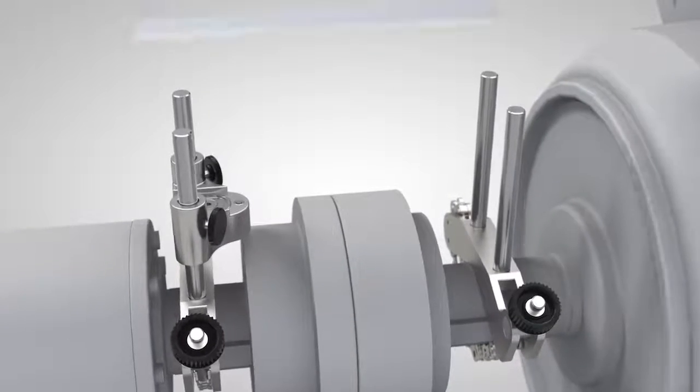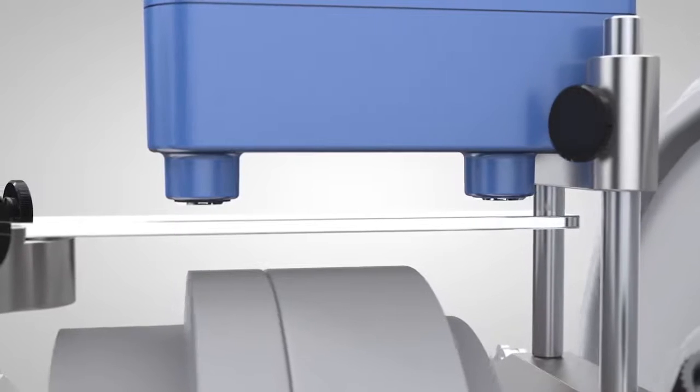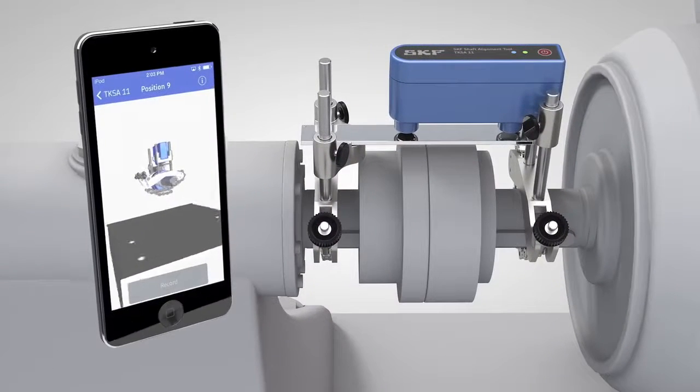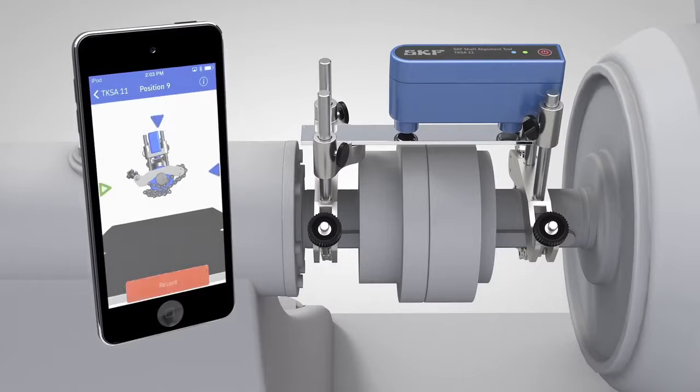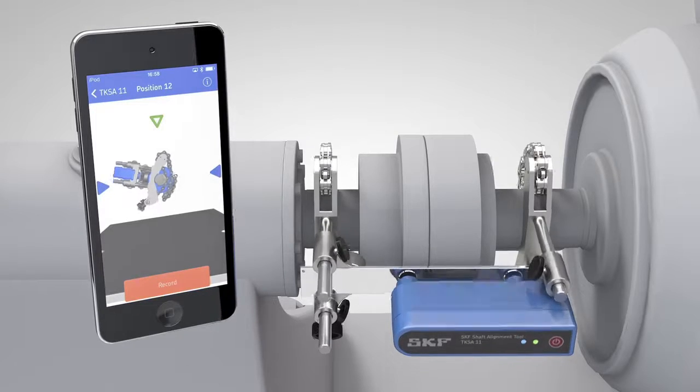SKF is proud to present the SKF Shaft Alignment Tool TKSA 11. By using innovative inductive proximity sensors and an intuitive app for mobile devices, the TKSA 11 is a very easy to use instrument that facilitates accurate shaft alignment.